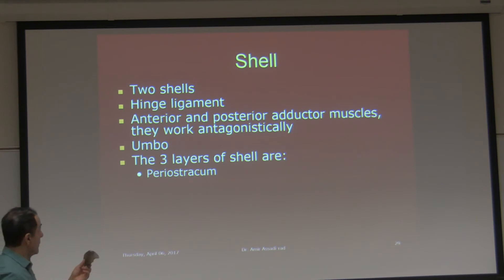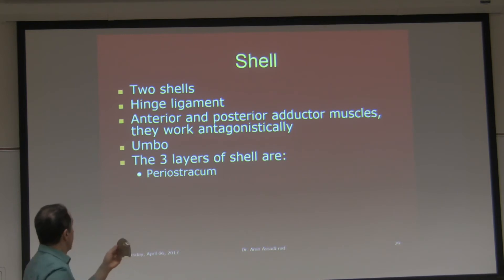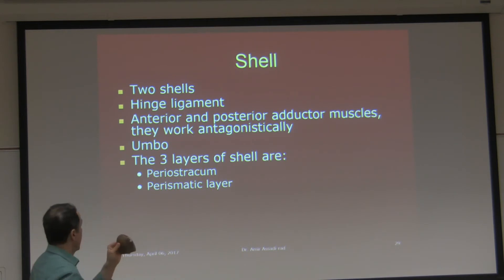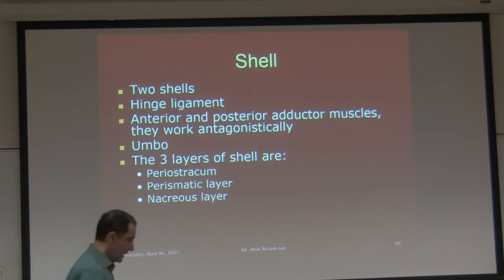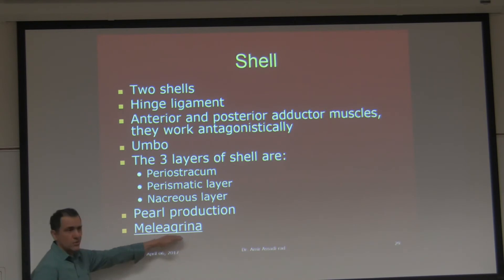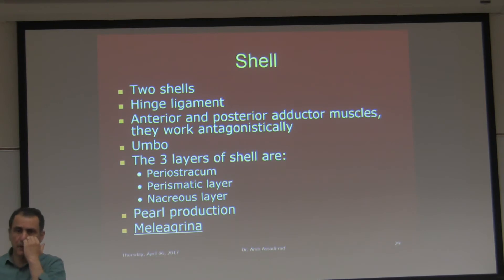The three layers of the bivalve shell: periostracum — the brown layer, which is a protein molecule; then the prismatic layer — whitish color, made up of calcium carbonate; and the nacreous layer — the shiny layer inside. Maggrinia is the name of the Japanese oyster genus used in farms for making pearls. I will talk about pearl production in a minute.